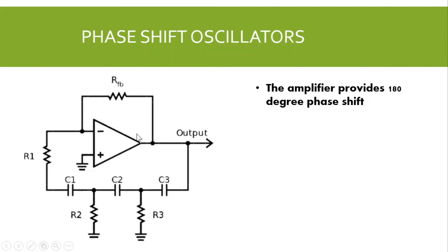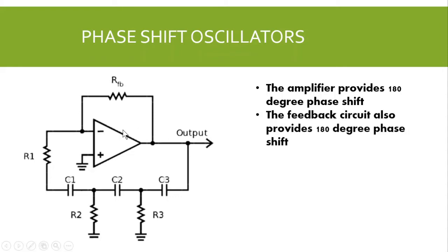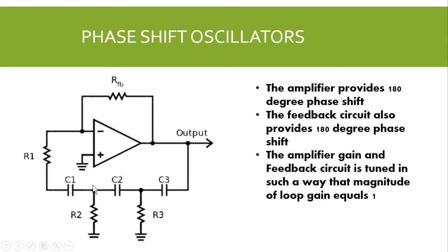In this oscillator, the amplifier provides a 180-degree phase shift. We can use BJTs, FETs, or an inverting op-amp as the amplifier in these RC phase shift oscillators. To get an overall phase shift of 0 or 360 degrees, the feedback circuit should also provide a phase shift of 180 degrees so that the overall phase shift is 360 degrees. Also, the gain of the amplifier and feedback circuit is tuned such that the magnitude of βA, that is the loop gain, equals 1.